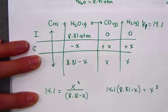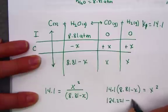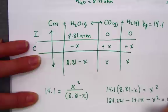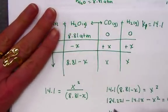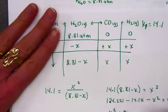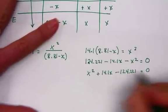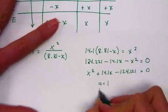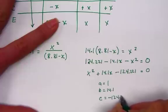Let's hit that together, 14.1 times 8.81. It shows me a value of 124.221 minus 14.1x minus x squared gives me the value of zero. Working into the quadratic equation, I will flip the signs and rewrite. Positive x squared plus 14.1x minus 124.221 equal zero. Our a value is 1, b is 14.1, and c is negative 124.221.